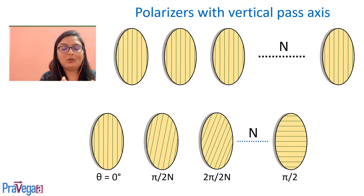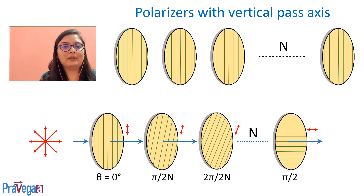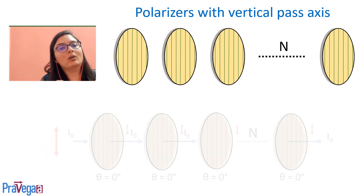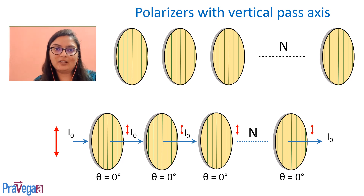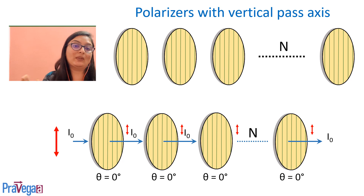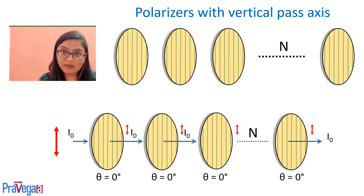No matter what the polarization of the incident light is, the output depends on the nth polarizer. Life would have been simple in two cases: first, if all polarizers are parallel with vertical pass axes, the vertically polarized incident light passes through all without any intensity loss, giving the same intensity and polarization at the end.